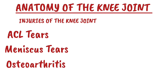Finally, the knee joint is a vital structure that enables movement, supports the body, and absorbs impact from contact forces. Its complex anatomy — including the bones, ligaments, cartilage, muscles, and synovial structures — ensures proper function and stability.